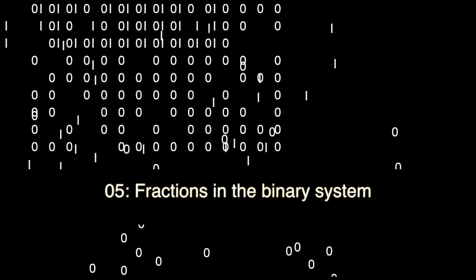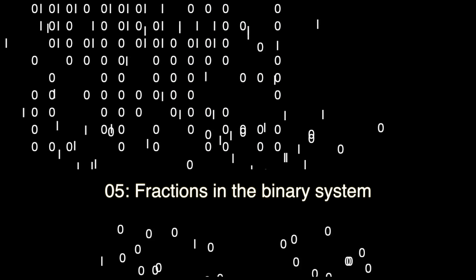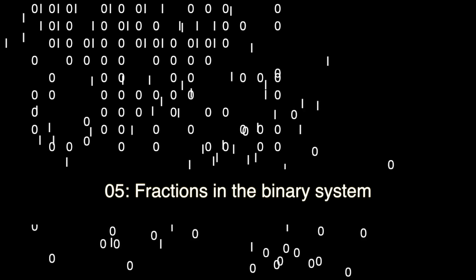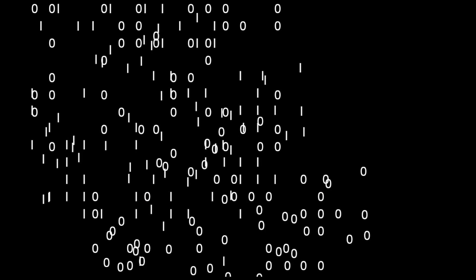Welcome to the fifth video in the binary number series. In this video I'm going to show you how we can deal with fractions in the binary system. To do that, first we're going to talk about power definitions and then extend the binary place value system. After that I'll show you a couple of examples of how to convert binary fractions into decimal fractions.